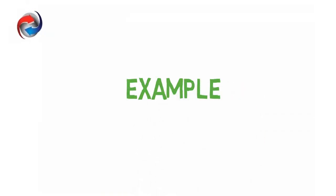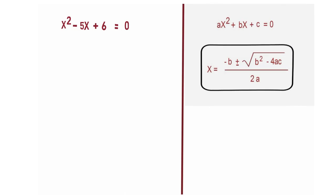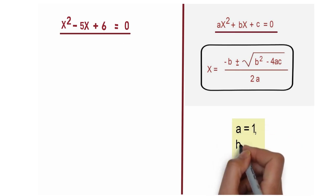Now in order to better understand, let's take an example. Suppose a quadratic equation is x² - 5x + 6 = 0. Let's compare the standard form of a quadratic equation with the equation taken as an example. So we get a = 1, b = -5, and c = 6.